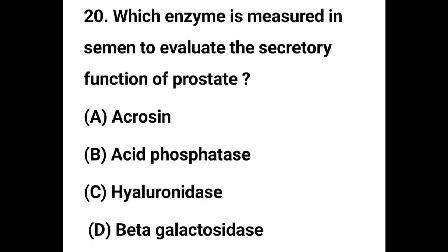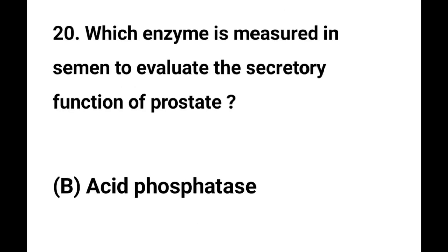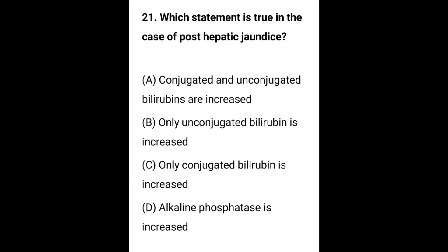Question number 20. Which enzyme is measured in semen to evaluate the secretory function of the prostate? Option A - Acrosin, Option B - Acid phosphatase, Option C - Hyaluronidase, Option D - Beta-galactosidase. The correct answer is Option B, Acid phosphatase. ACP is done to detect the function of the prostate.